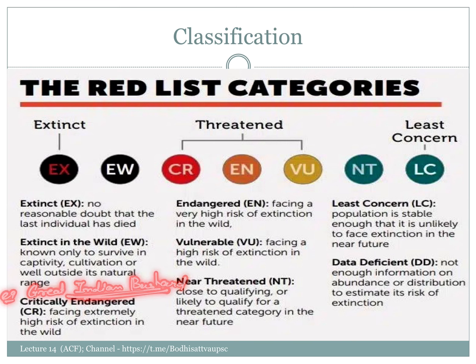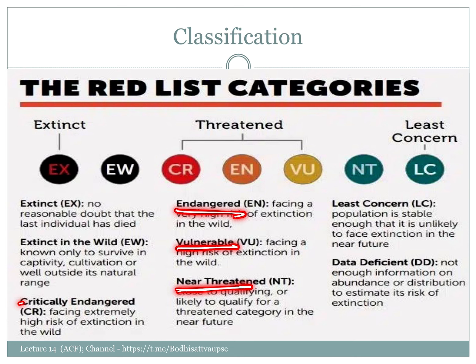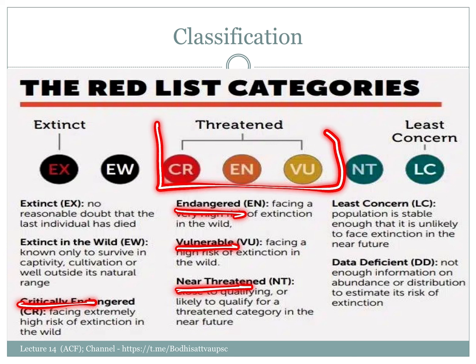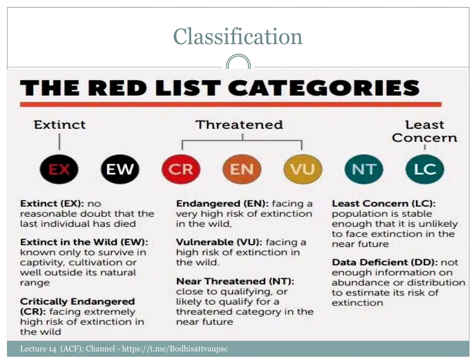The endangered category has a high risk of extinction involved. Then there is the vulnerable category, near threatened, and data deficient. In the injured and critically endangered categories, there are further sub-classifications. The Asian one-horned rhino has a vulnerable status.